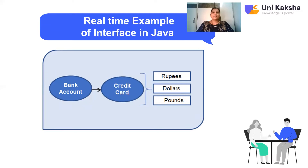Now let's consider a real-time example of interfaces. You can think about a bank account or a credit card. Suppose you went to a shop, selected a product, and tried to pay. The shopkeeper told you they accept only dollars or pounds. Since you have cash in rupees, or if you use a simple debit card, it is not possible to perform the international transaction.